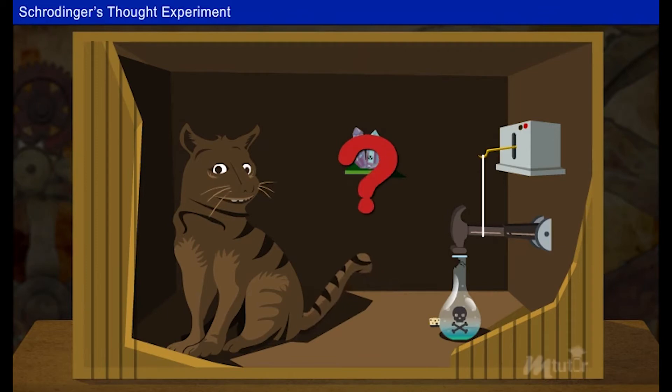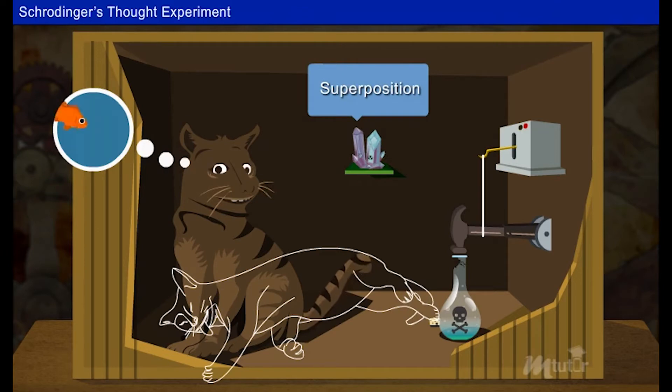And now, what is actually happening inside the box? Is the radioactive atom in a superposition state? Is the cat alive or not? We have to open the box and see. But according to quantum mechanics, the state of superposition is not observed.